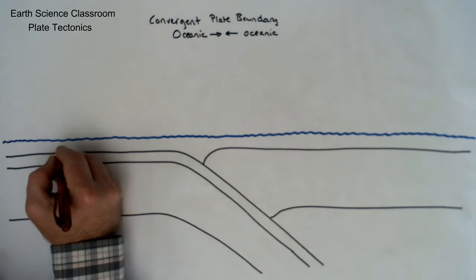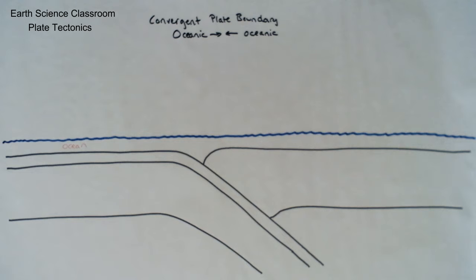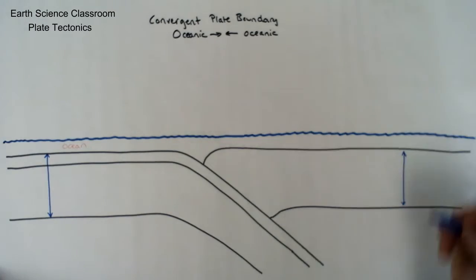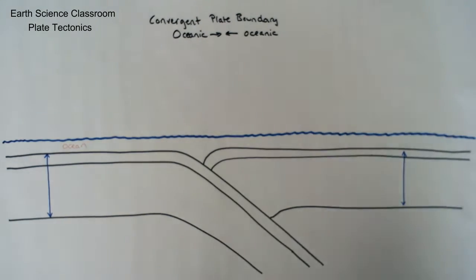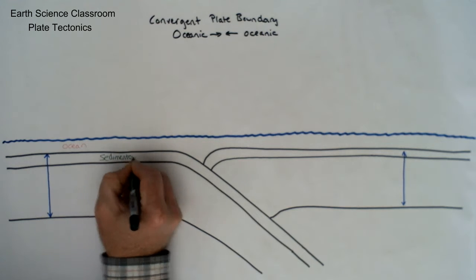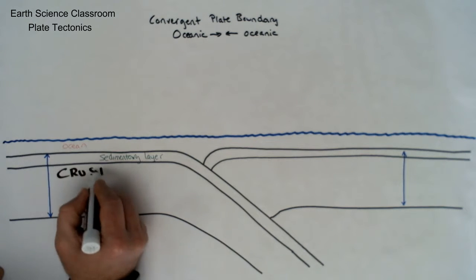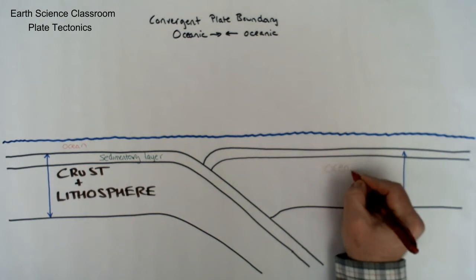So these two plates are both oceanic. They are both generally thinner, between 5 to 15 up to 20 kilometers in thickness, and I've drawn in a thin layer of sedimentary rock that's on the very top surface of the plate. Of course, the plate is made up of both the crust and lithosphere, and the Moho is the bottom black line which separates the plate, or the crust, from the upper mantle.